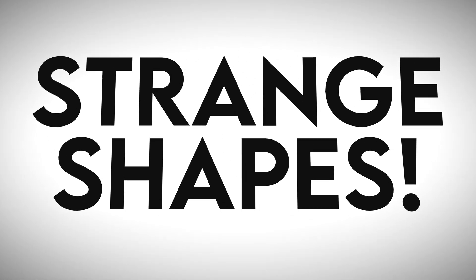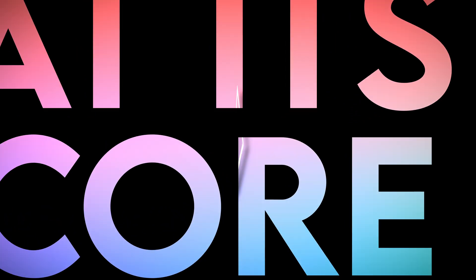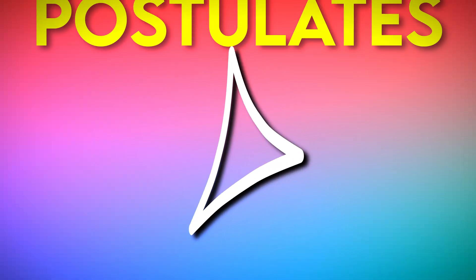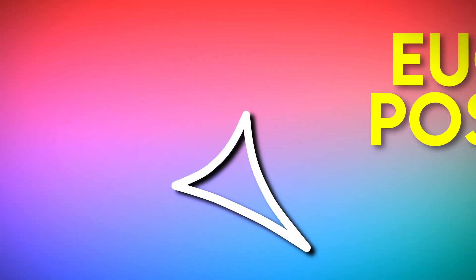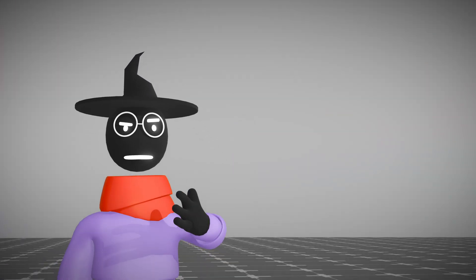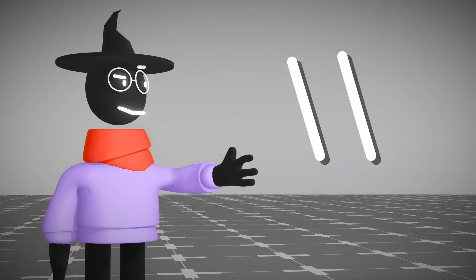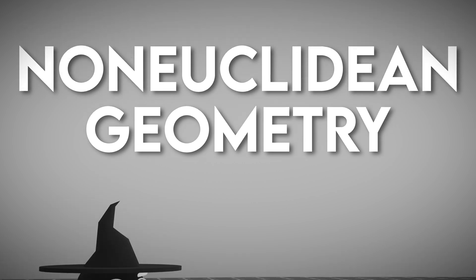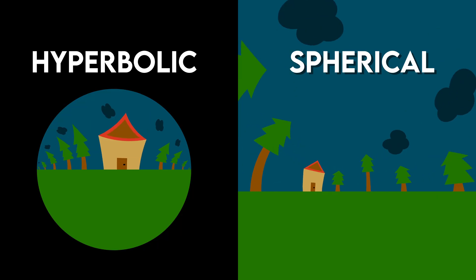Non-euclidean geometry, at its core, is geometry that does not follow euclidean postulates. More specifically, it gets rid of the parallel postulate and brings forth the two forms of non-euclidean geometry, hyperbolic and spherical.